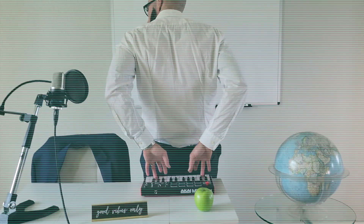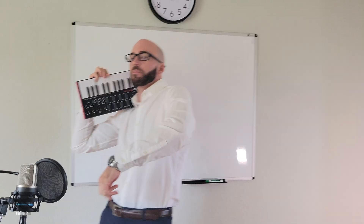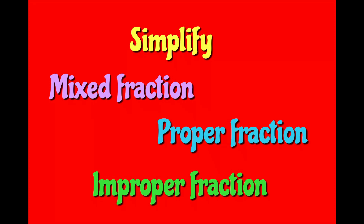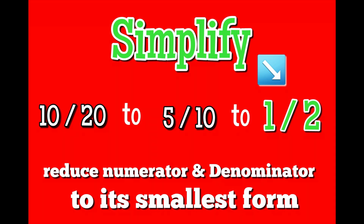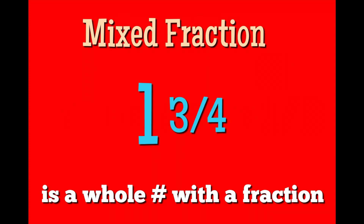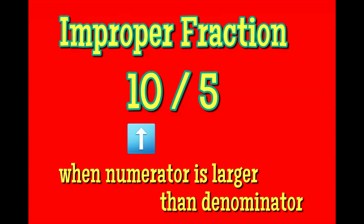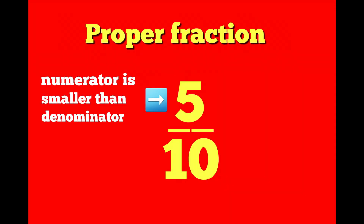A couple things you need to know before we dive in — the proper terminology that I'ma help y'all vibe with. Simplify, mix, proper, improper — the four components of a fraction problem. Simplify five-tenths to a half. Mix the whole number with a fraction on the back. Improper's when the large number's on top of the stack. And the proper's just the opposite of that. Let's do the math.